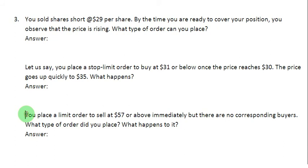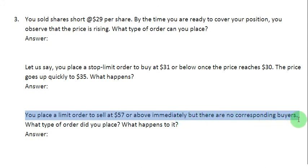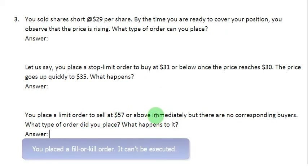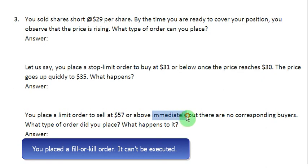We have another question. You place a limit order to sell at $57 or above immediately, but there are no corresponding buyers. What type of order did you place and what happens to it? The answer is pretty obvious: you placed an order meant to be filled immediately. Since it was a limit order meant to be filled immediately and it cannot be filled because there are no corresponding buyers, the order cannot be executed. The order you placed was a fill or kill order.